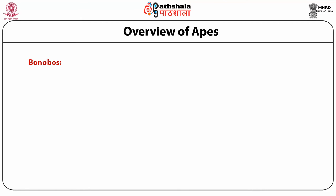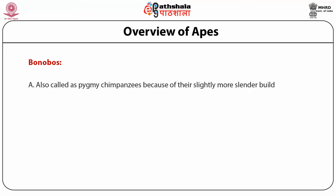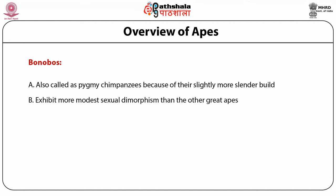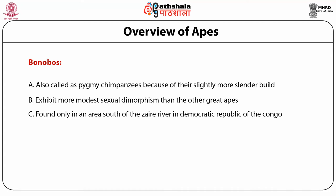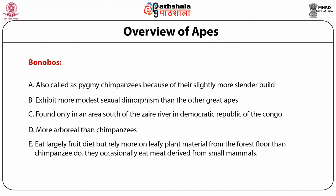Bonobos are similar to chimpanzees and are also called pygmy chimpanzees because of their slightly more slender build. They exhibit more modest sexual dimorphism than other great apes. They are found only in an area south of the Zaire River in the Democratic Republic of the Congo. They have longer legs relative to their arms, a relatively smaller head, dark face from birth, and tufted hair at the side of the face. They are more arboreal than chimpanzees and eat largely fruit, but occasionally eat meat from small animals.